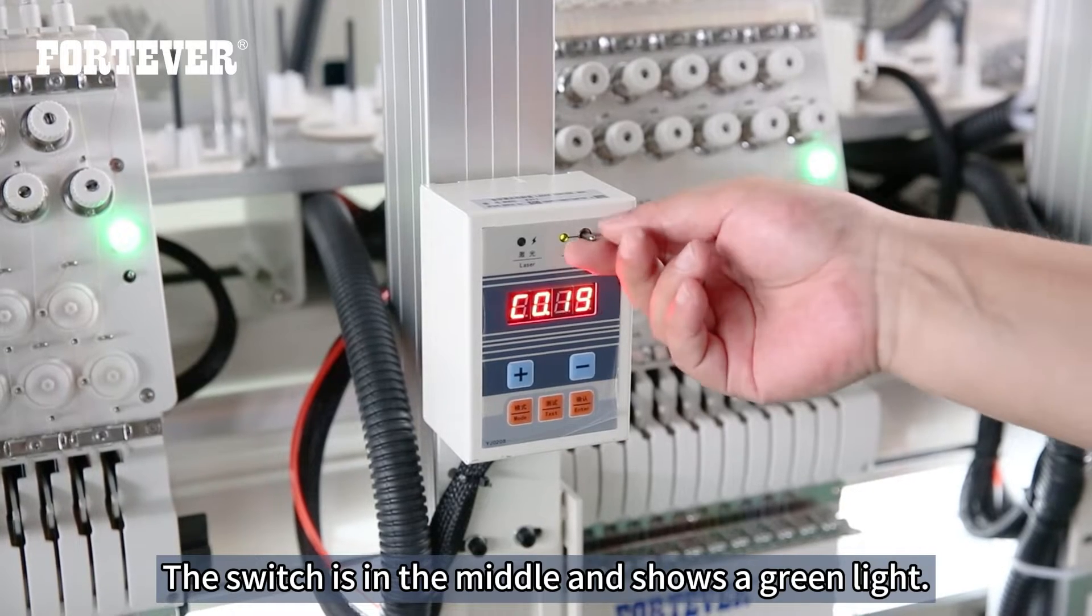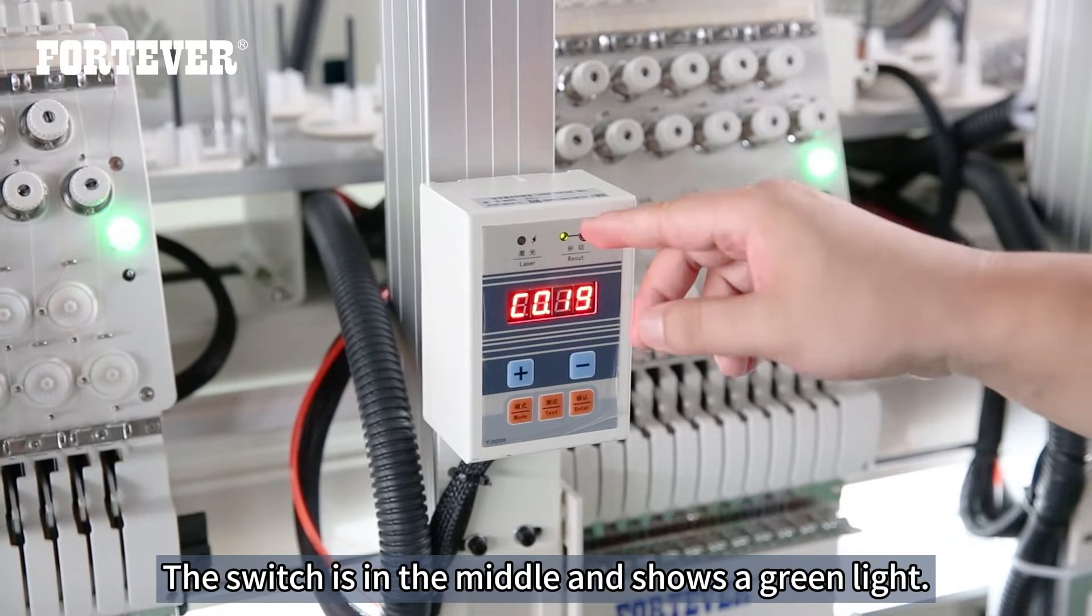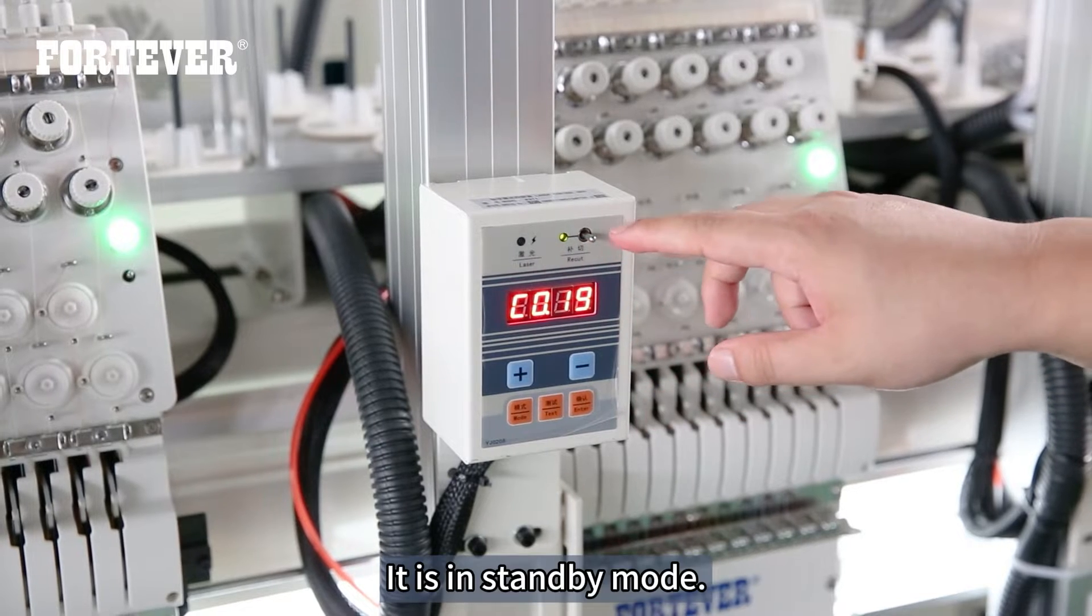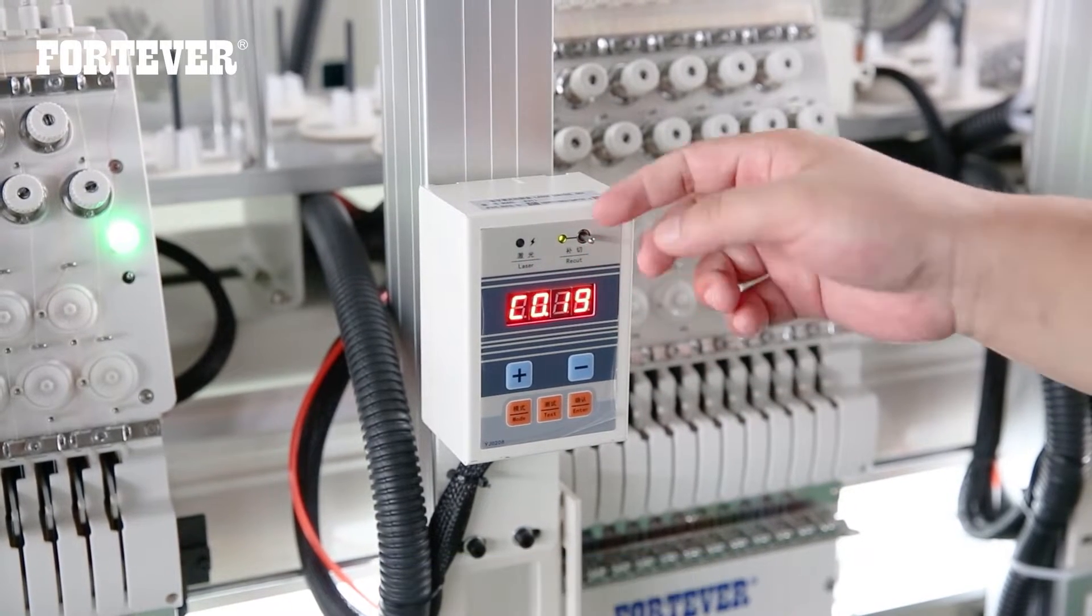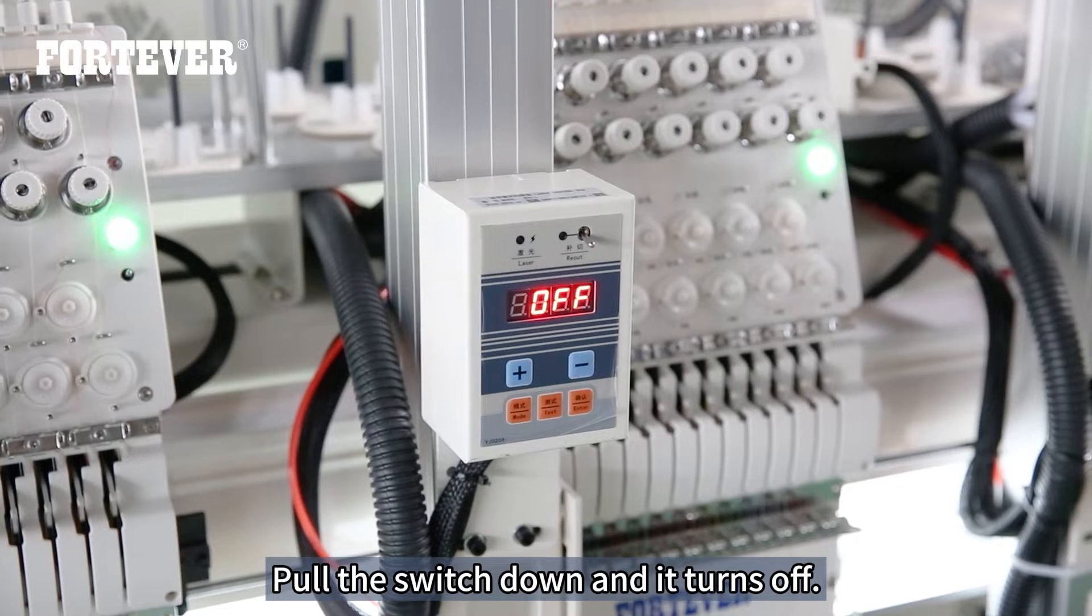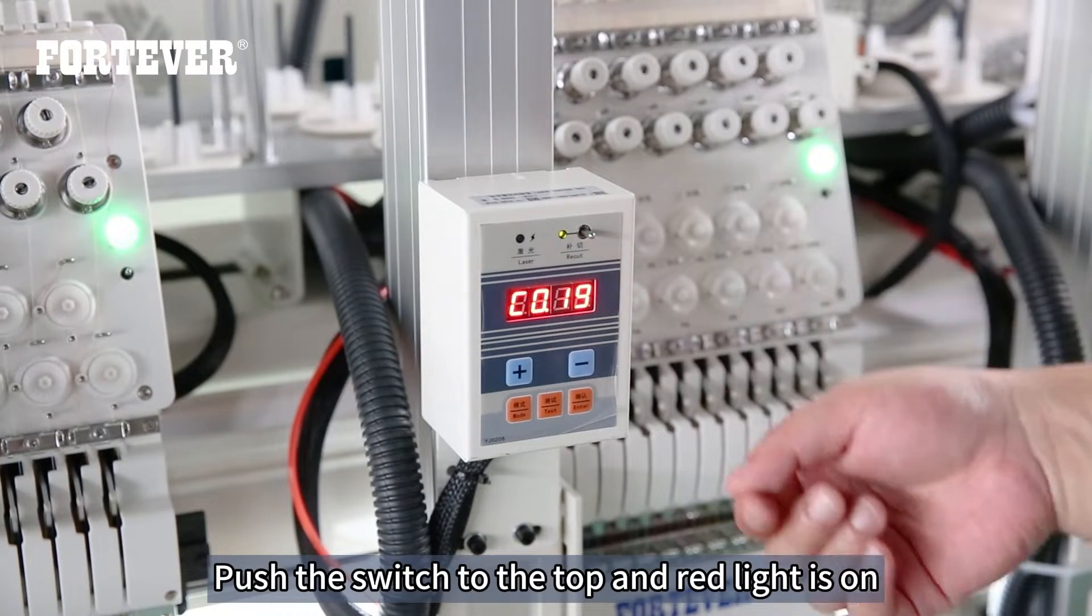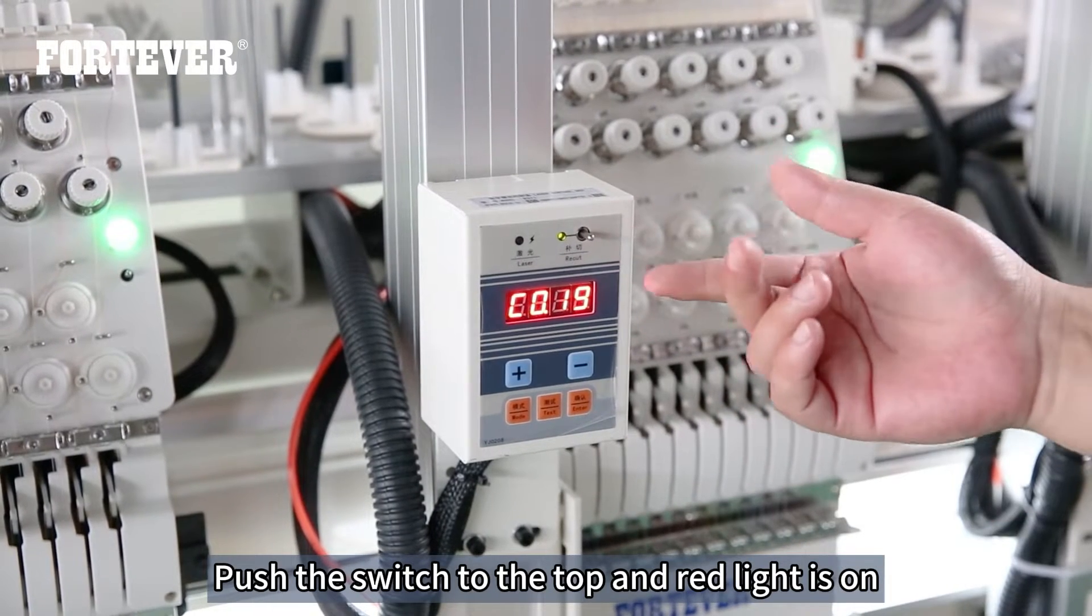The switch is in the middle and shows a green light. It is in standby mode. Pull the switch down and it turns off. Push the switch to the top and red light is on.